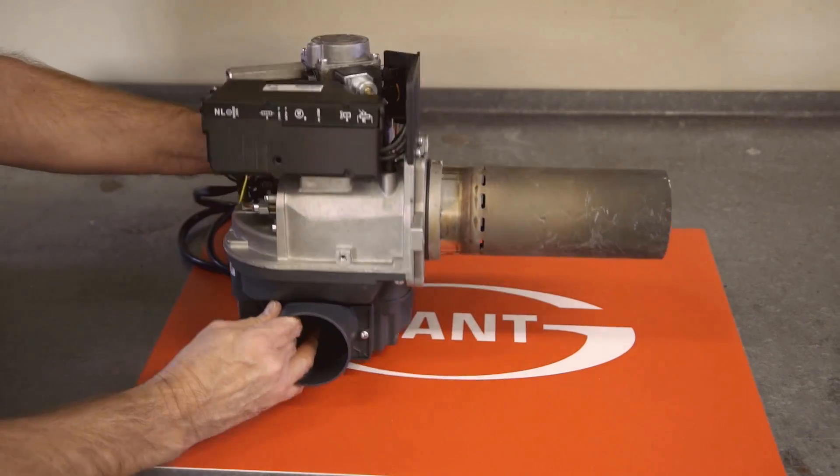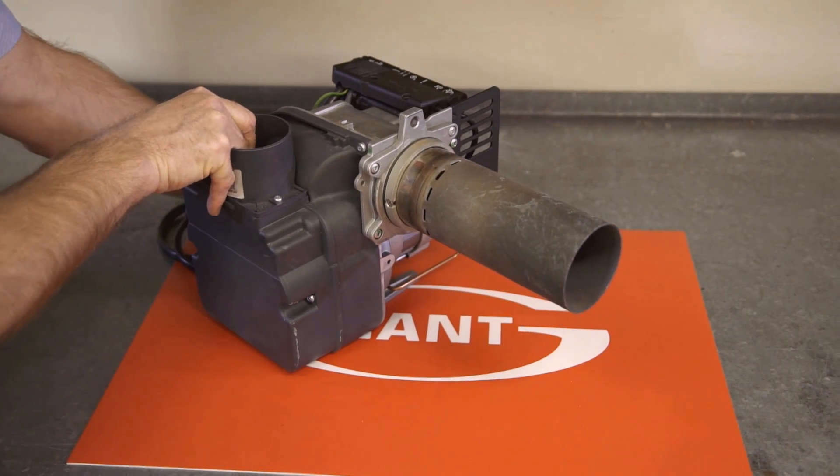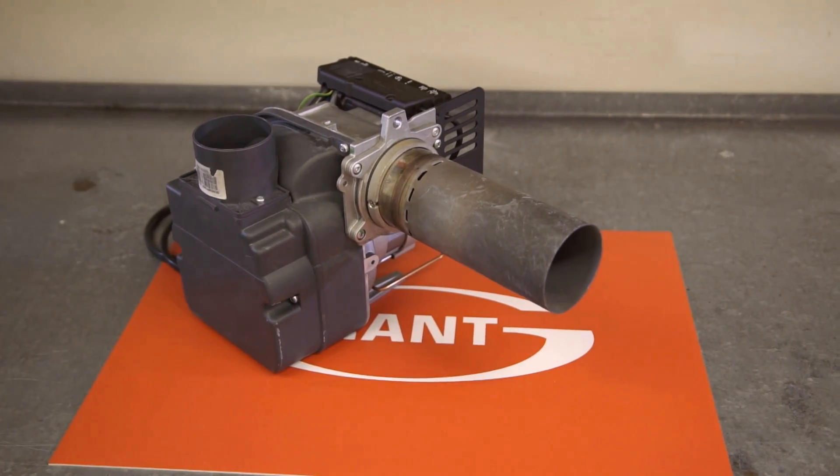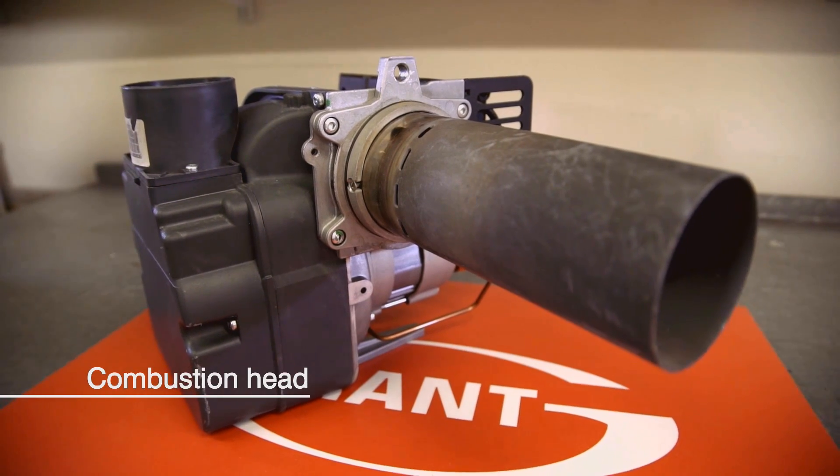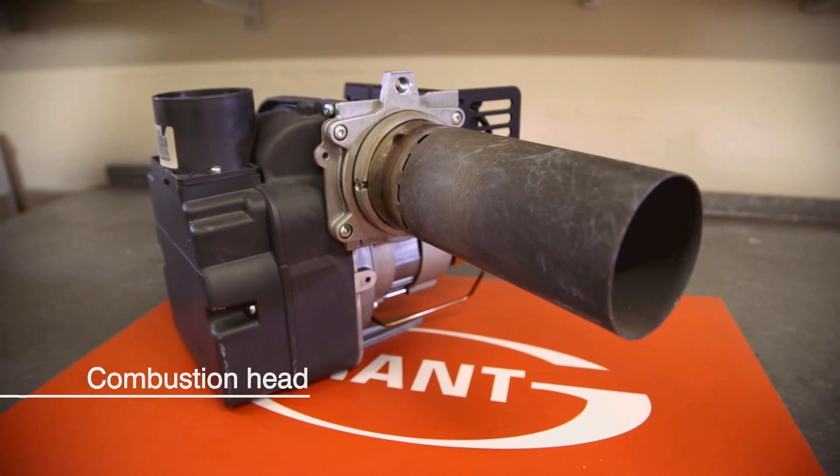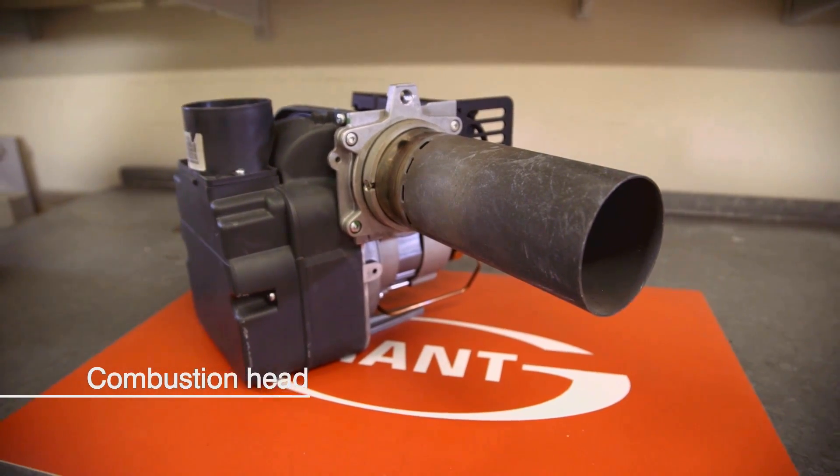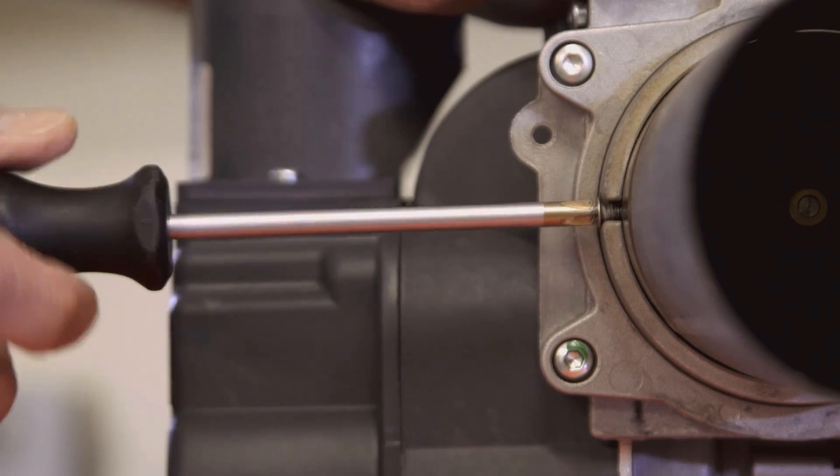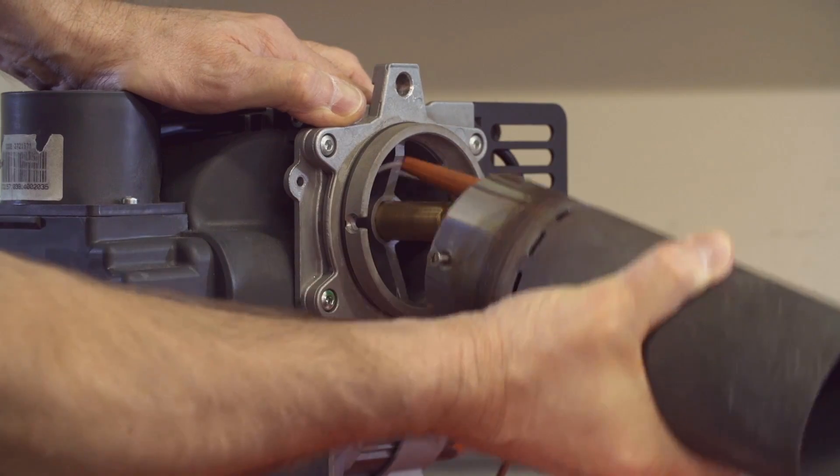Moving round to the other side of the burner you'll see the most obvious difference is the longer combustion head. You fit the combustion head the same way as usual with two screws. Just loosen these and you can pull out the head from the burner body.